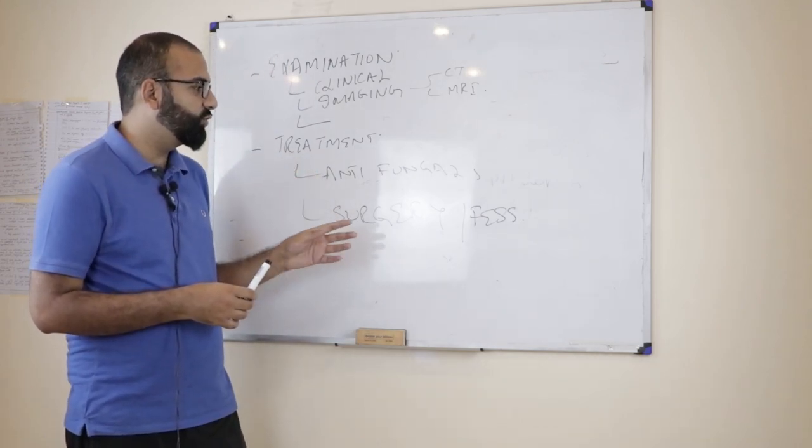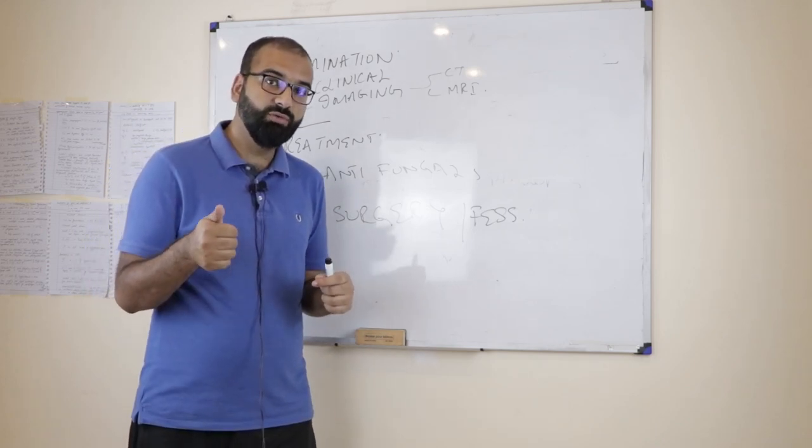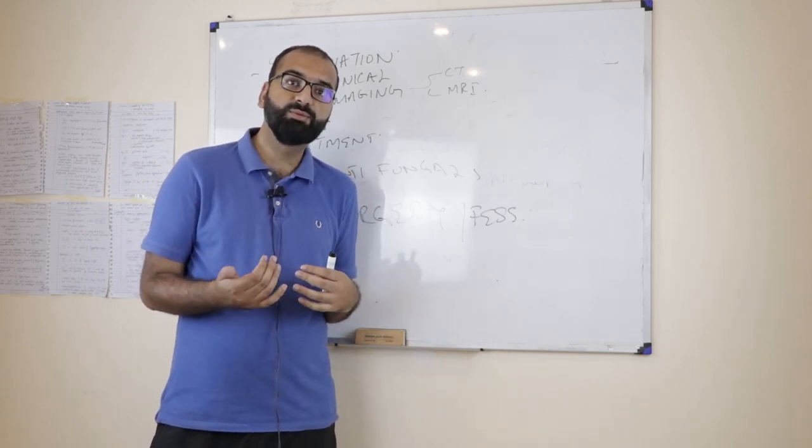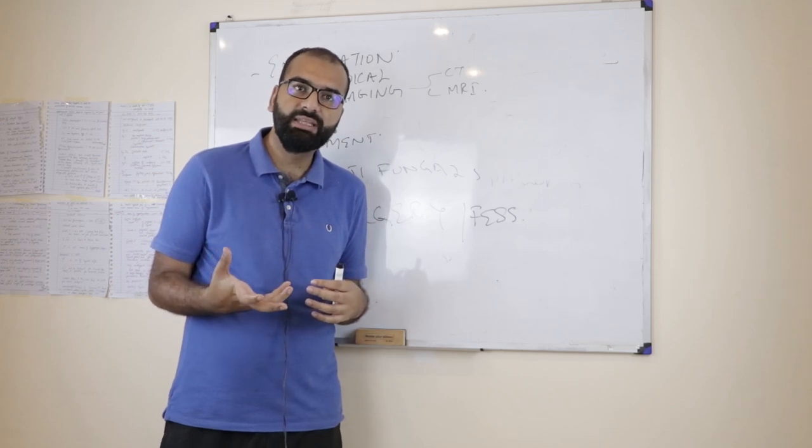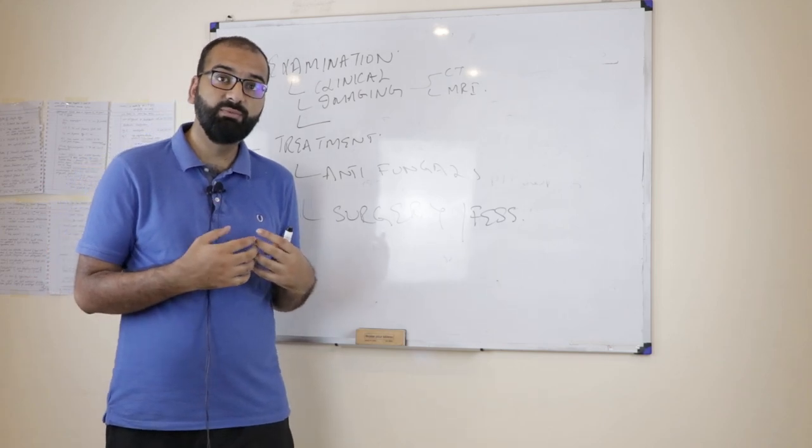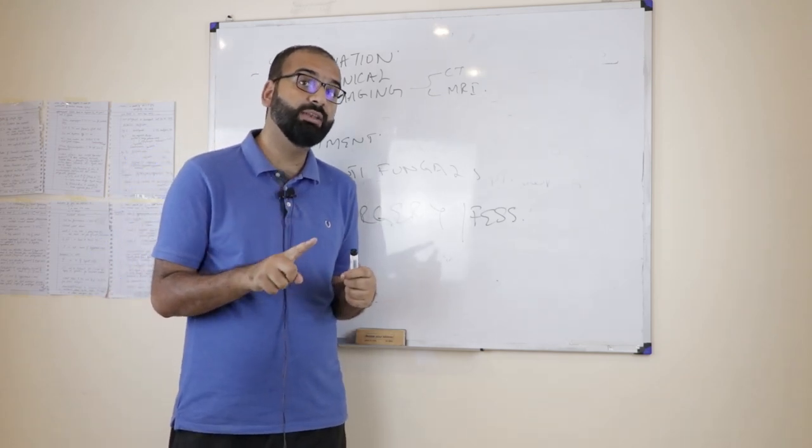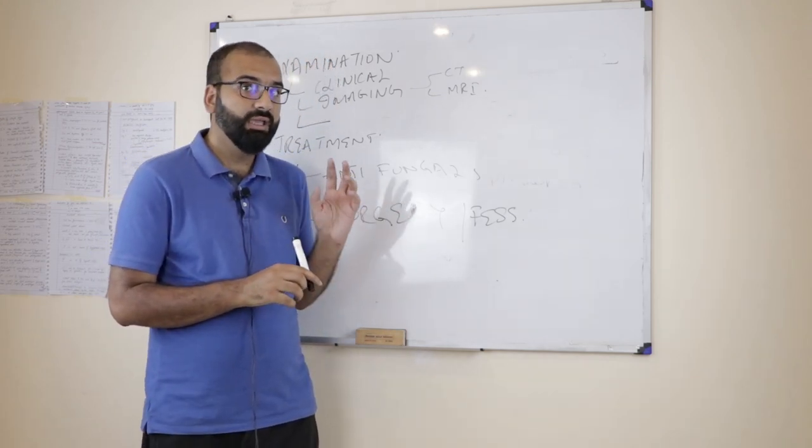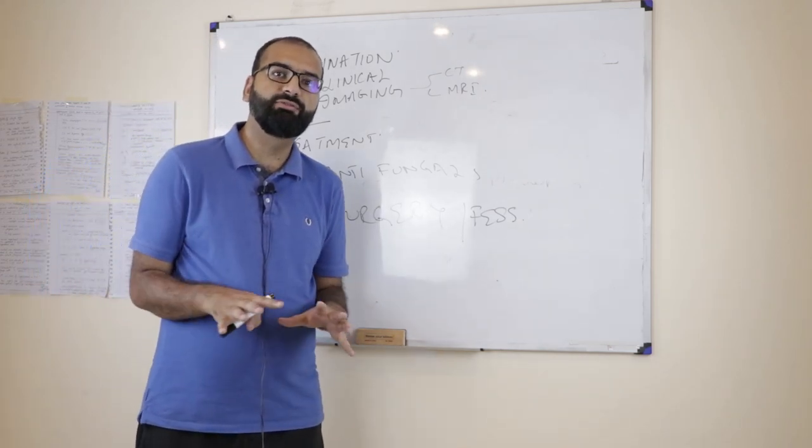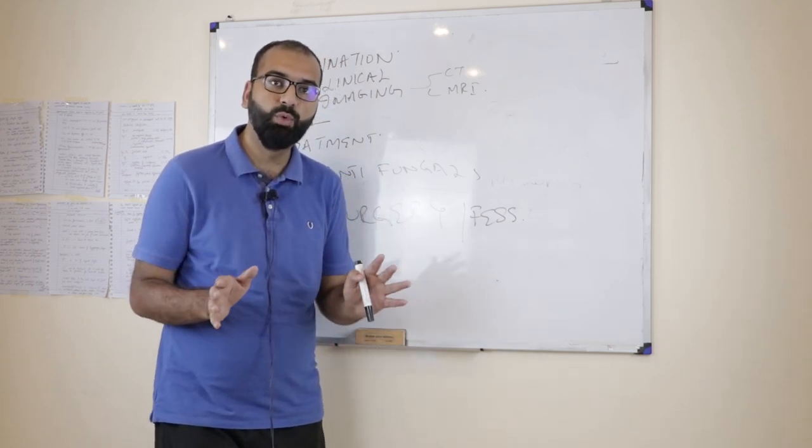Then for the treatment, you have to go for antifungals. Why? Because it's a fungus disease. There are different types of antifungals available. There are certain types which are more dangerous to the kidneys. They are more nephrotoxic but they are less costly and then there are certain types which are much more costly but they are much less nephrotoxic. But both of them can cause nephrotoxicity in this particular case. Also, you have to go for surgical debridement or the FES to clear out the disease so that the antifungals can act more effectively.